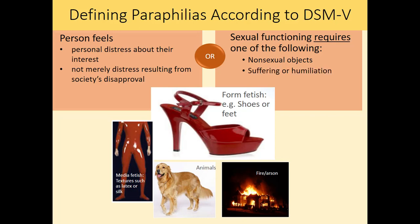Another possible object is that the person needs to experience suffering or humiliation, or they need to believe their partner is truly suffering or truly experiencing humiliation. I'm not talking about role playing or agreed safe-word kinds of activities — I'm talking about a person who literally needs their partner to be truly suffering or truly feeling humiliation, or they need to be feeling those things themselves. The final category would be needing a non-consenting partner in order for sexual arousal to occur. So you can either be on the side of the person feeling distress, or you need a non-sexual object, suffering, humiliation, or a non-consenting partner — you don't need to have all of this.